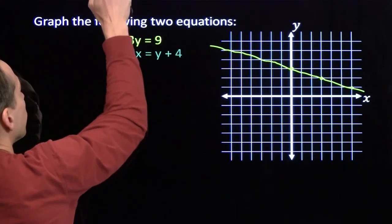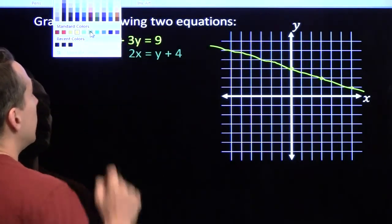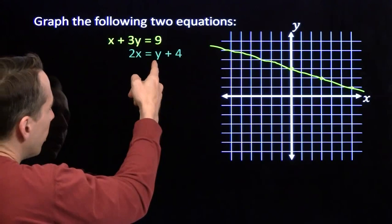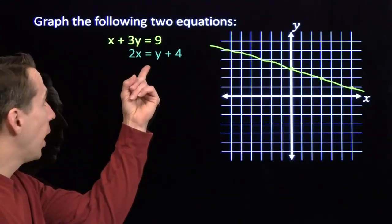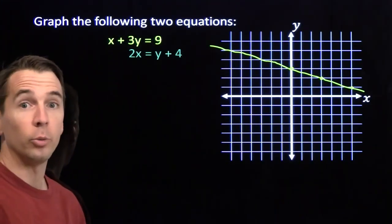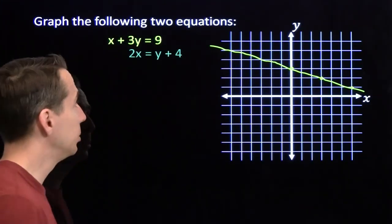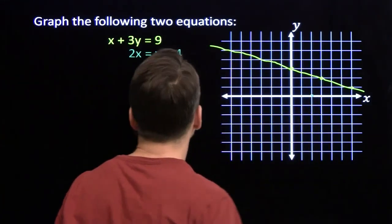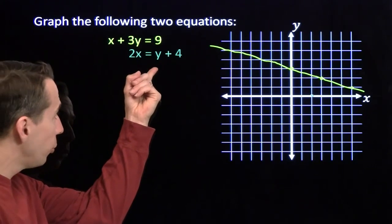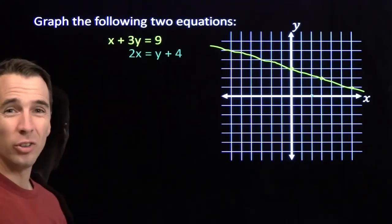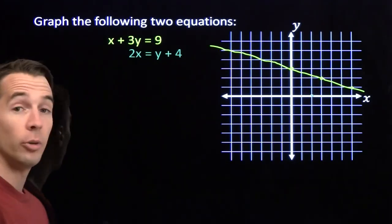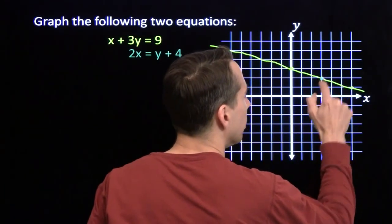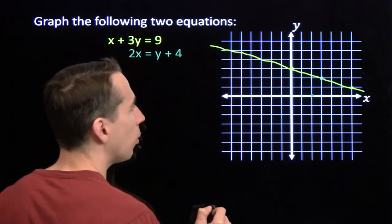Move on to the green line — green line means we need a green pen. If I put 0 in for y, I'll have 2x equals 2, so x has to be 2. So (2, 0) is on the graph. Now if I put in y equals 2, I'll have 2x equals 3, that means x has to be 3. So the point (3, 2) is on the graph — and that was on the yellow line also.